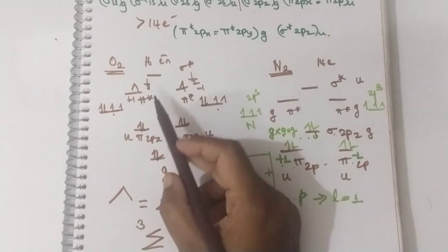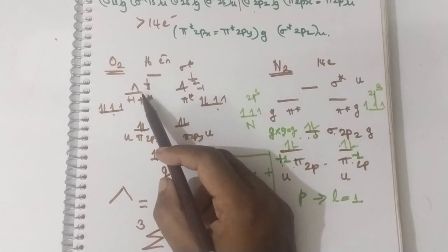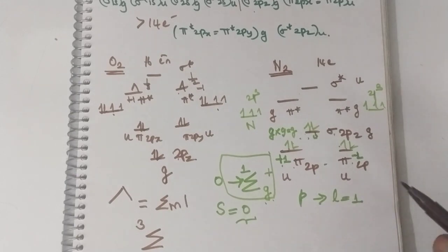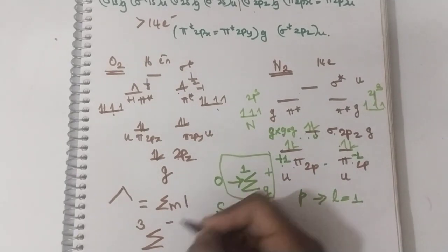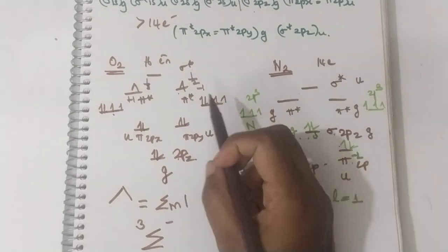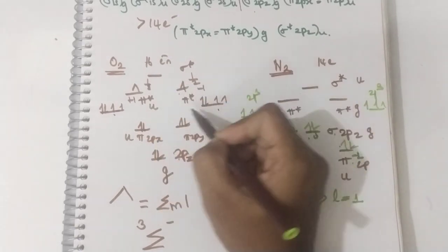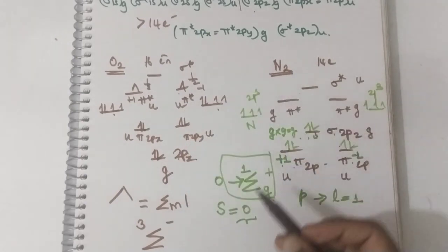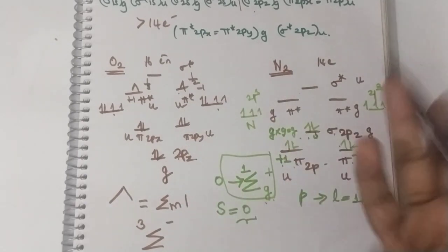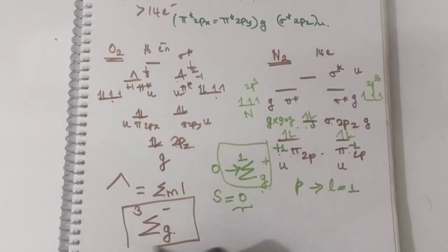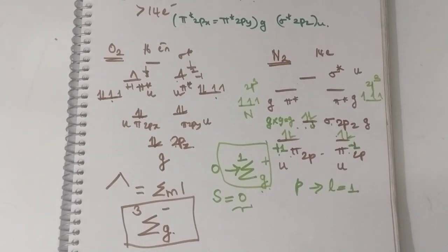The electrons are present in the pi* orbital. Whenever the electron is present in the pi orbital, there will be a minus sign. Pi* is gerade — wait, pi* is ungerade. Both electrons are in ungerade pi* orbitals, so u × u = g, which gives gerade. Hence the spectroscopic term symbol for O2 is ³Σg⁻. It is a very easy topic — this is how you find out the term symbol for diatomic molecules.